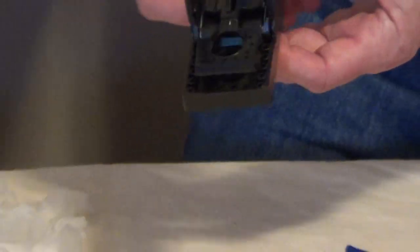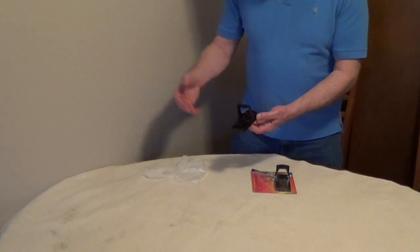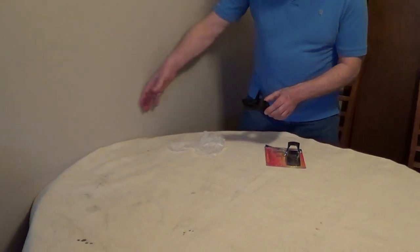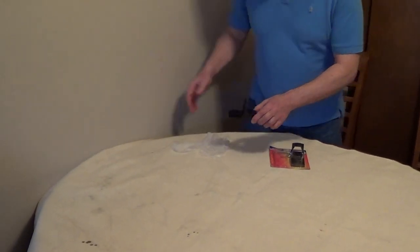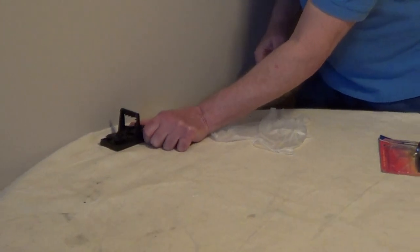When you're setting the trap, what you're looking for for placement is evidence of mice. So either gnaw marks or droppings and you want to put it close to a wall. They tend to hug walls and you want to set this perpendicular to the wall rather than parallel.